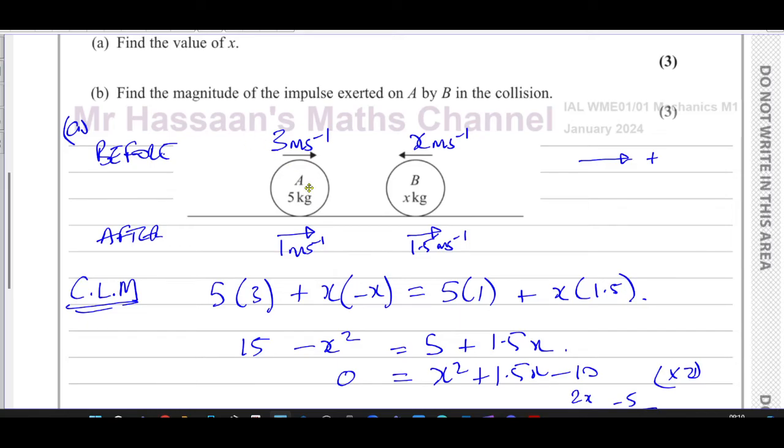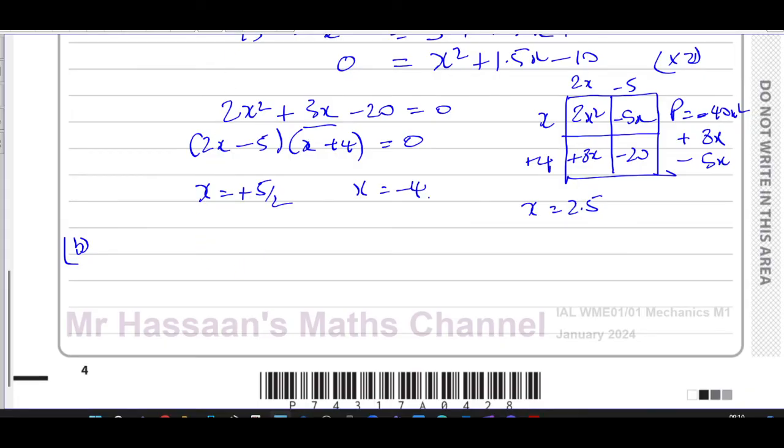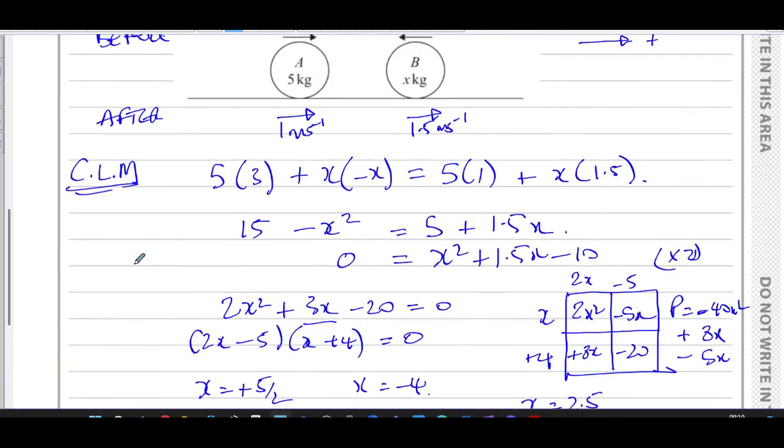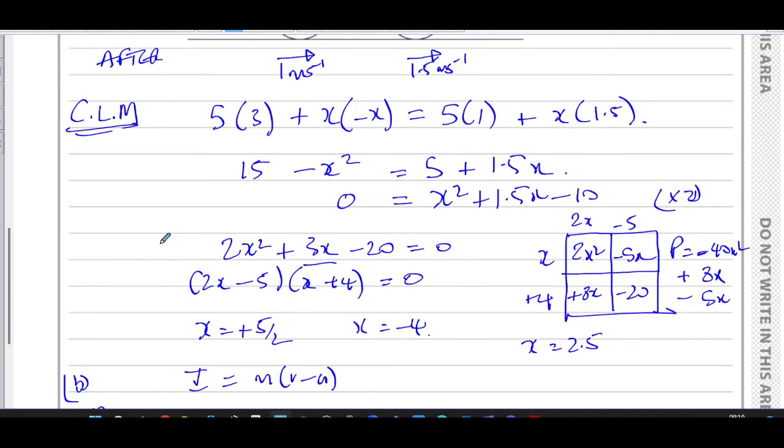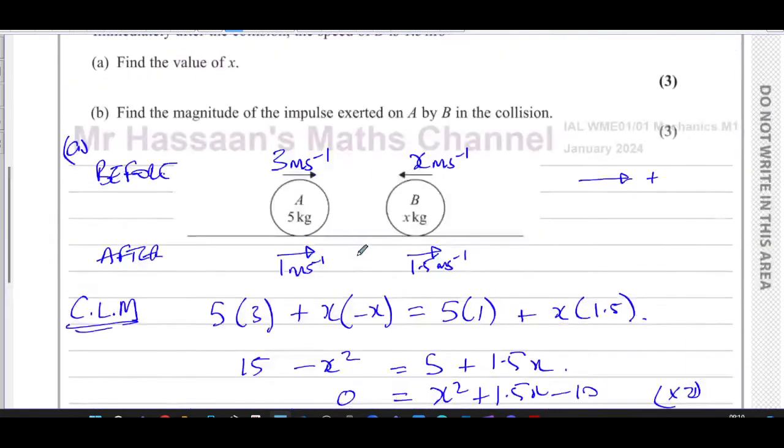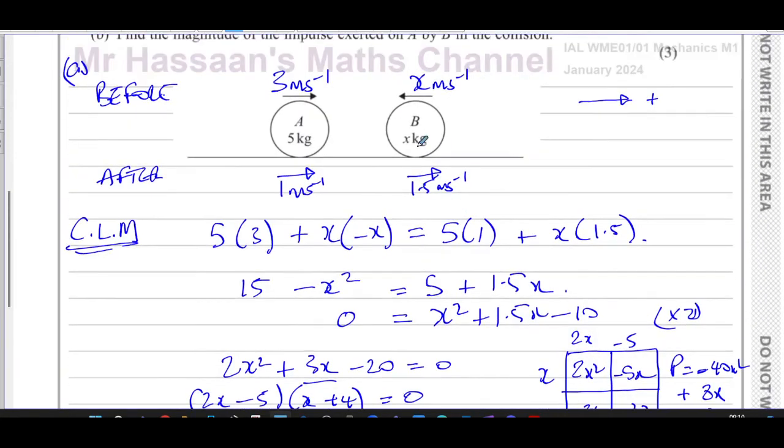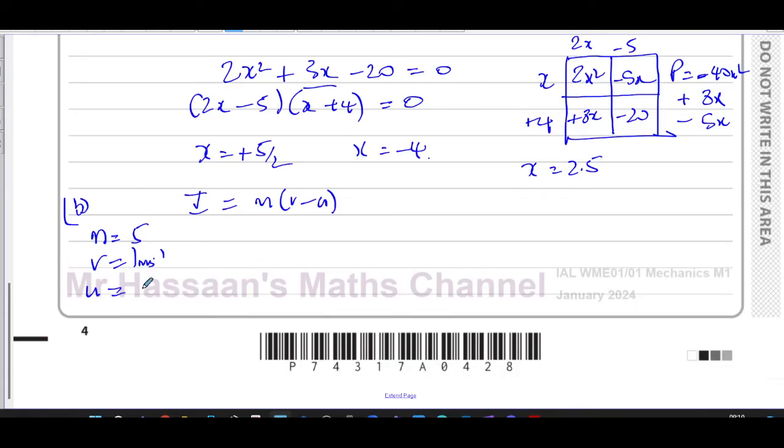Let's see the change of momentum of A. The impulse equals the change in momentum. So it's M times V minus U. In this case, the mass of A is 5 kilograms. We can say the final speed of A after the collision was 1 meter per second in the positive direction, and the initial speed before the collision was 3 meters per second in the positive direction.